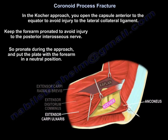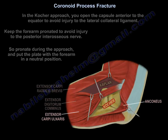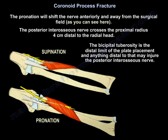In the Kocher approach, you open the capsule anterior to the equator to avoid injury to the lateral collateral ligament, and you will keep the forearm pronated to avoid injury to the posterior interosseous nerve. Pronate during the approach and put the plate with the forearm in a neutral position. The pronation will shift the nerve anteriorly and away from the surgical field. The posterior interosseous nerve crosses the proximal radius 4 cm distal to the radial head. The bicipital tuberosity is the distal limit of plate placement — anything distal to that may injure the posterior interosseous nerve.